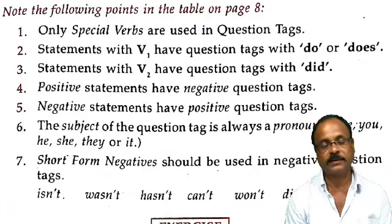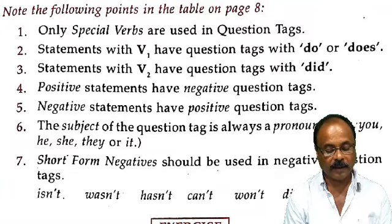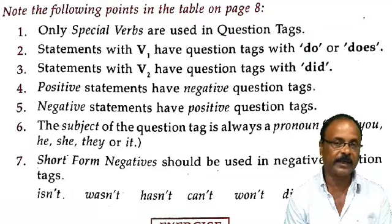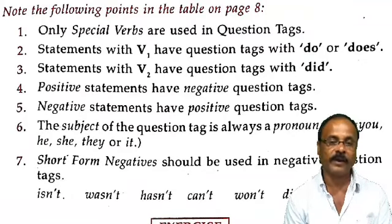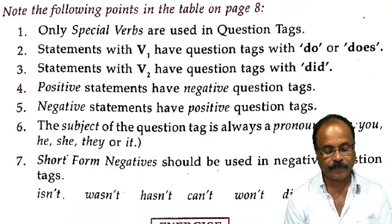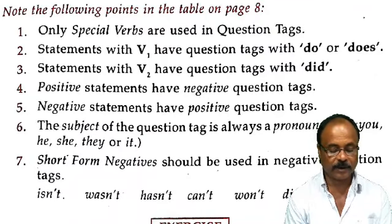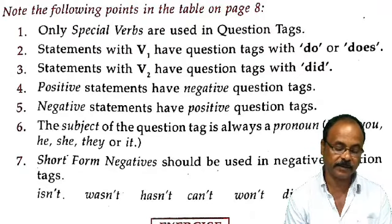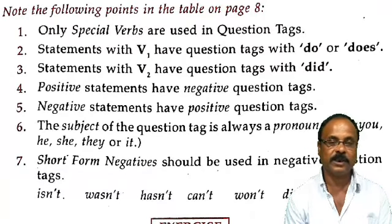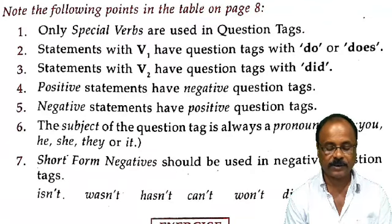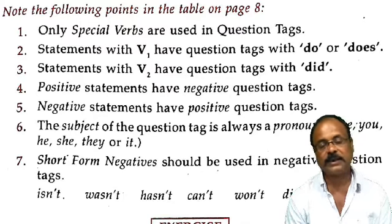Number 6: The subject of the question tag is always a pronoun — I, we, you, he, she, they, or it. Number 7: Short form negatives should be used in negative question tags, such as: isn't, wasn't, hasn't, can't, don't, didn't, won't.